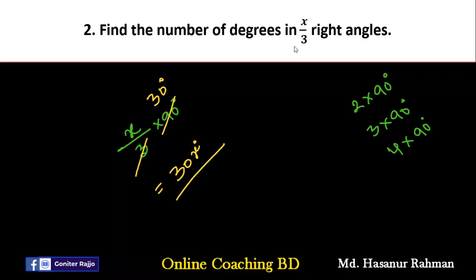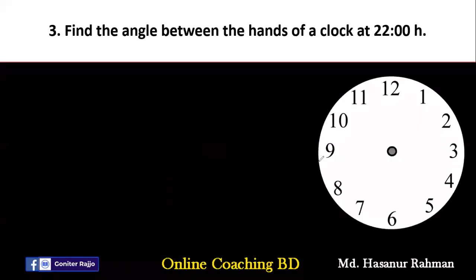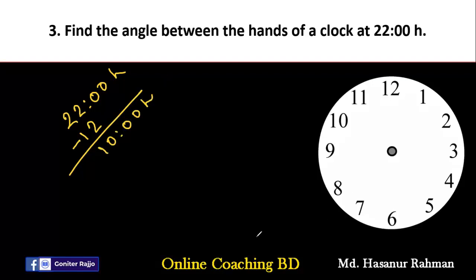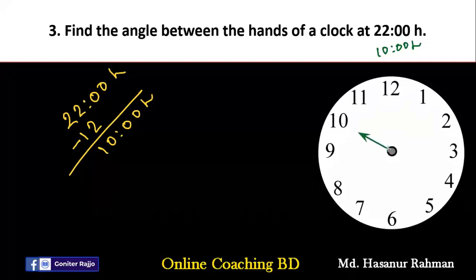Number three says: find the angle between the hands of a clock at 22 hours. In a clock we can only see 12 hours, so if we subtract 12 from 22 we get 10 hours. The question actually asks us to find the angle between the hands of a clock at 10 hours. To understand this, let's draw it — the hour hand is at 10 and the minute hand is at 12.